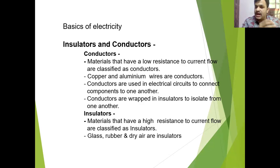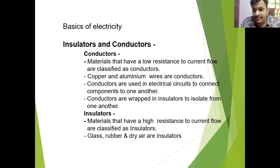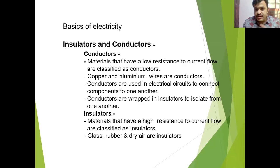I hope you understand what are conductors and what are insulators. Now coming to examples of conductors — you have heard of copper. Copper is a metal, and aluminium. Aluminium and copper wires are used in our homes for wiring. These wires are conductors because they have low resistance to current flow, so current will flow through them.